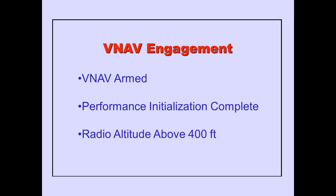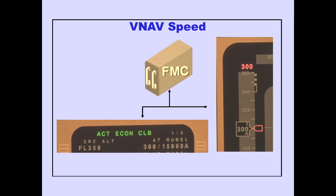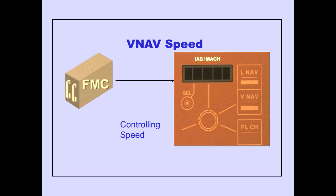In review, VNAV engagement occurs if VNAV is armed, the performance initialization is complete, and the radio altitude is above 400 feet. VNAV speed is computed by the FMC and is displayed on the FMS-CDU climb page. The FMC also automatically displays the VNAV command speed on the PFD. When the FMC is controlling speed, the IAS mode window is blank.